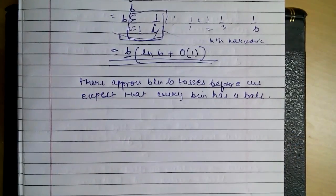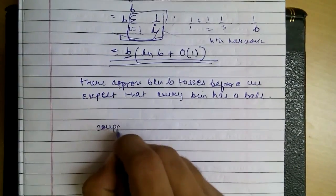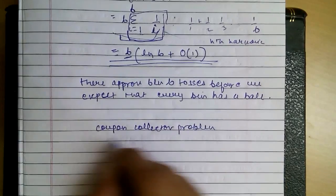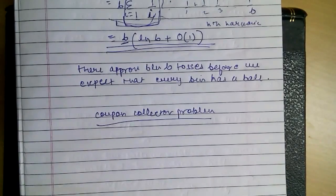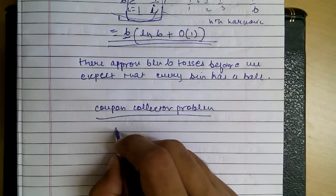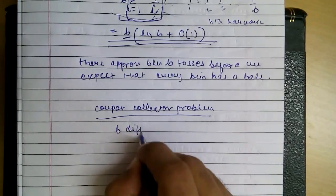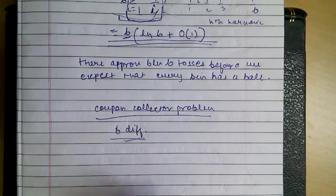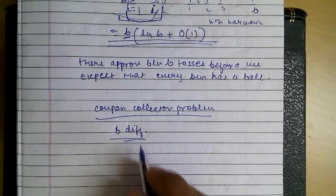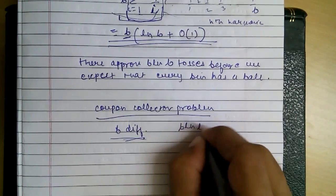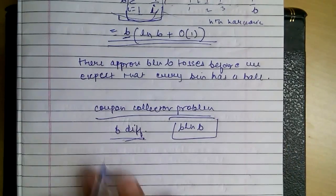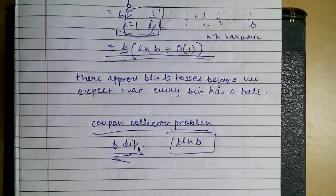The problem of this balls and bins is sometimes also known as a coupon collector problem. What is it? In this, a person tries to collect B different coupons. So how many must he buy randomly so he will be having each type of B different coupon? It is like he buys B log B coupons to get this many different coupons. It is the same as getting B hits in our balls and bins problem.